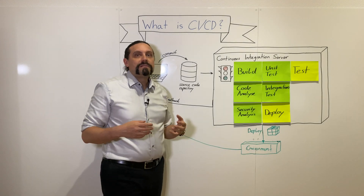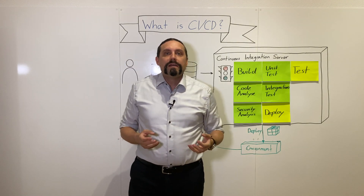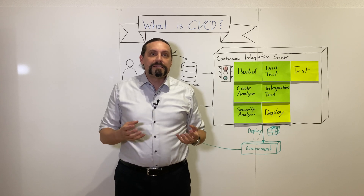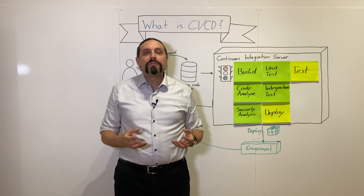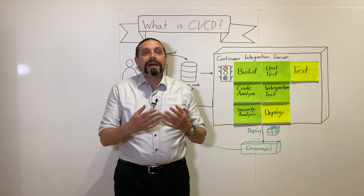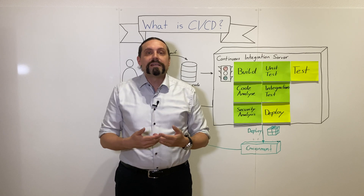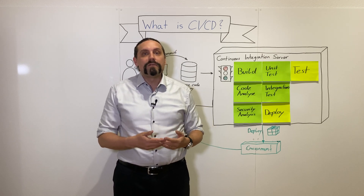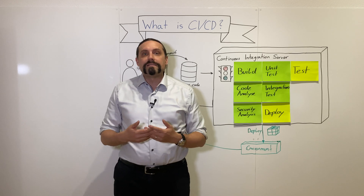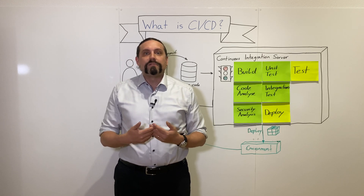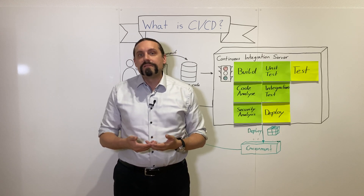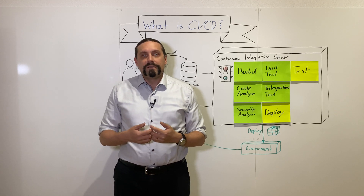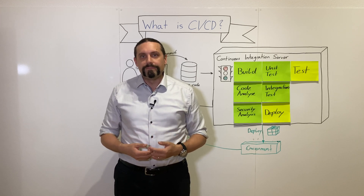With continuous delivery, the developer is able to see problems that could happen when doing a production deployment very early. That's why this is a very good method to spot problems early in the process of developing software.